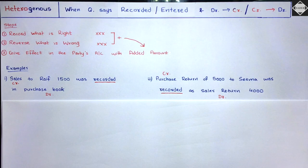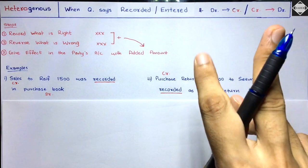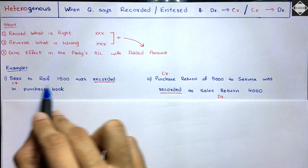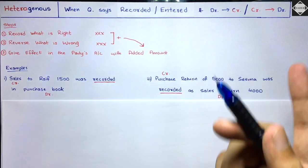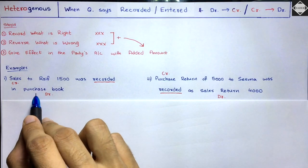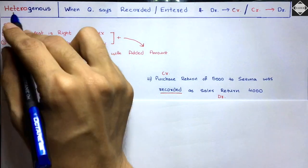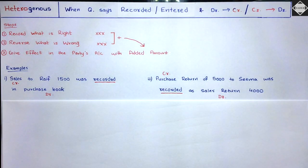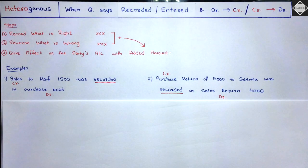Let's start with the first heterogeneous example: 'Sales to Rife ₹1500 was recorded in purchase book.' Keyword: recorded — first category. Sales has credit balance; purchase has debit balance — credit has gone into debit, different boundaries — heterogeneous. Let's first prove this with the conventional method before applying the trick.